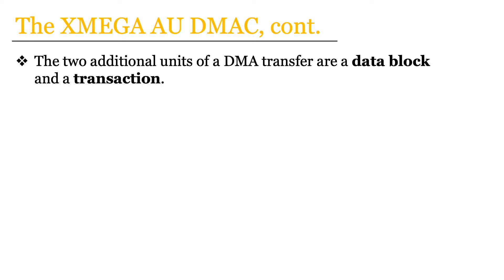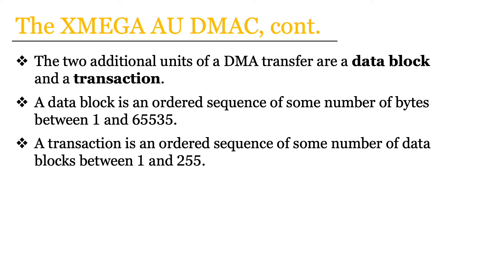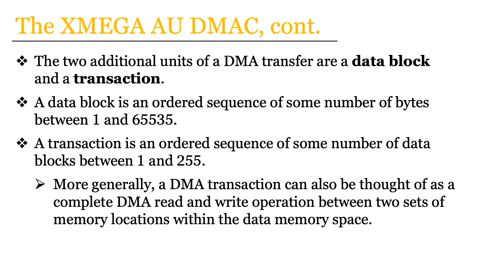There are essentially two other additional units of a DMA transfer in the context of an XMega AU microcontroller: a data block and a transaction. A data block is an ordered sequence of some number of bytes, where this number is between 1 and 65,535. A transaction is an ordered sequence of some number of data blocks, where this number is between 1 and 255. More generally, we can also define a DMA transaction as a complete DMA read and write operation between the two relevant sets of memory locations within our data memory space.